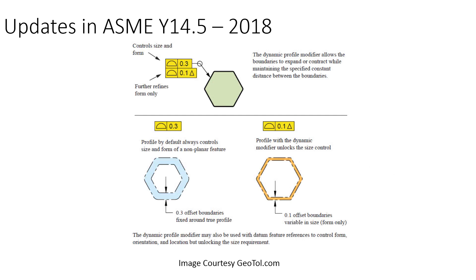We all know that a profile tolerance zone is static and controls both form and size of the considered feature by default. The dynamic profile tolerance modifier is added when it is decided to refine the form but not the size. As you can see in this image, the first profile tolerance controls both size and form within 0.3. As a refinement of form, another profile tolerance is added with the dynamic profile tolerance modifier, so that portion controls only the form, unlocking the size control.